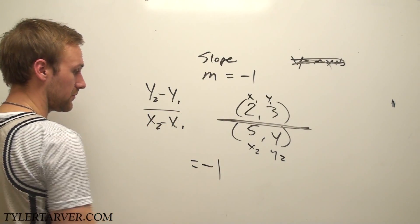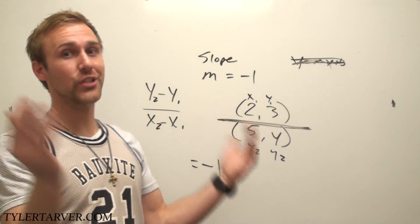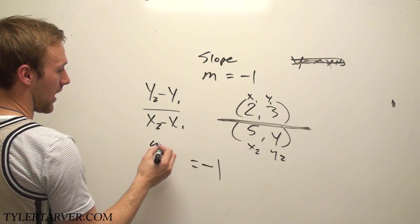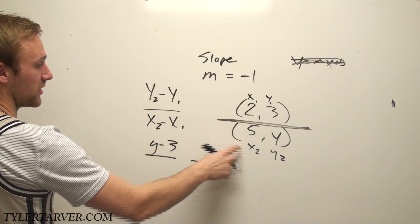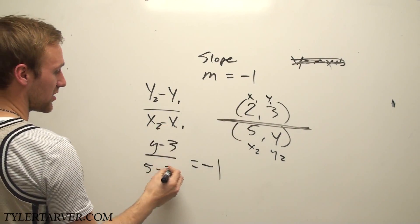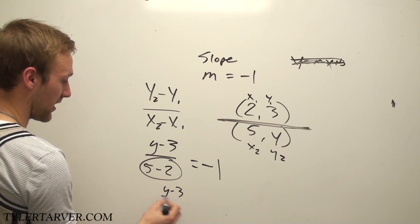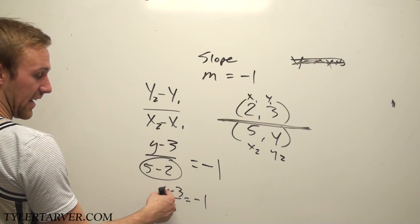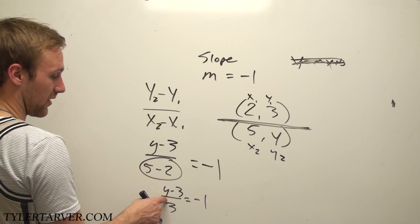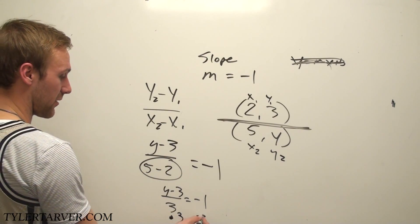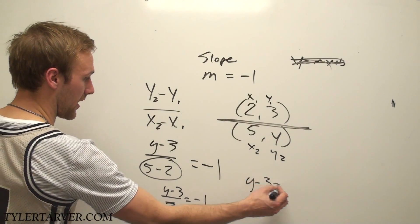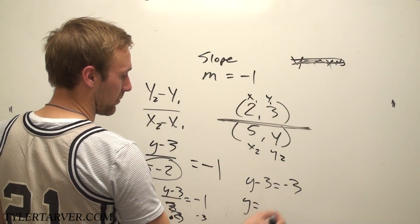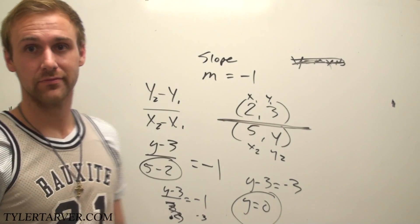So now we just do what I always say: plug in what you know to find what you don't know. y2 is our y, minus y1 which is 3, over x2 which is 5, minus x1 which is 2. Simplify: y minus 3 over 3. To get rid of the divide by 3, multiply both sides by 3 — that cancels out. We get y minus 3 equals negative 1 times 3, which is negative 3. Add 3 to both sides: negative 3 plus 3 is 0. Y equals 0. That's your answer.